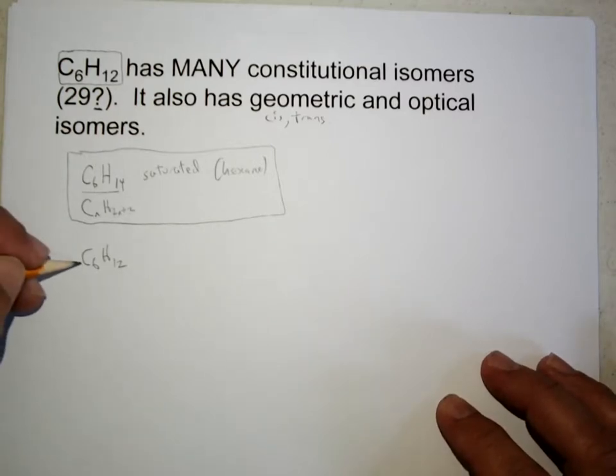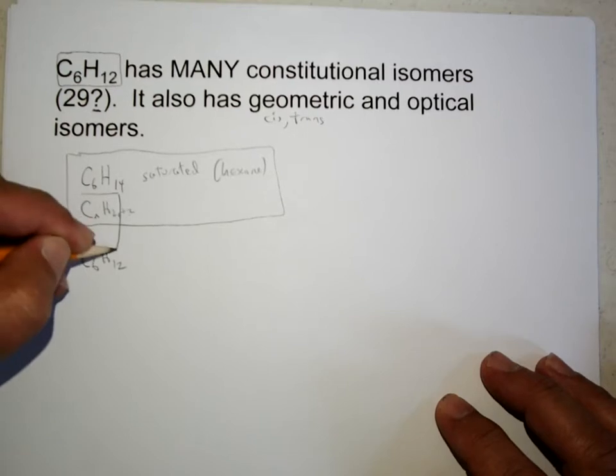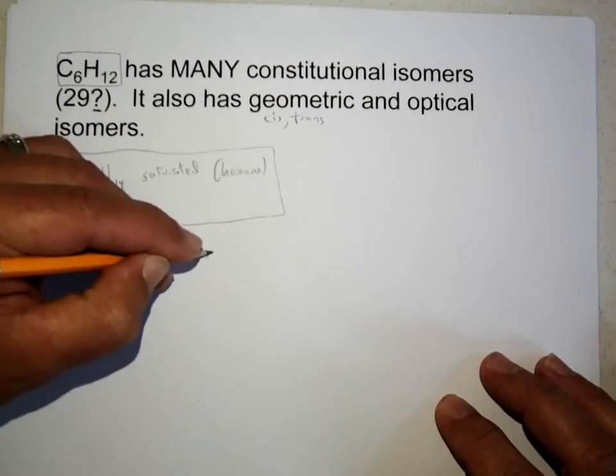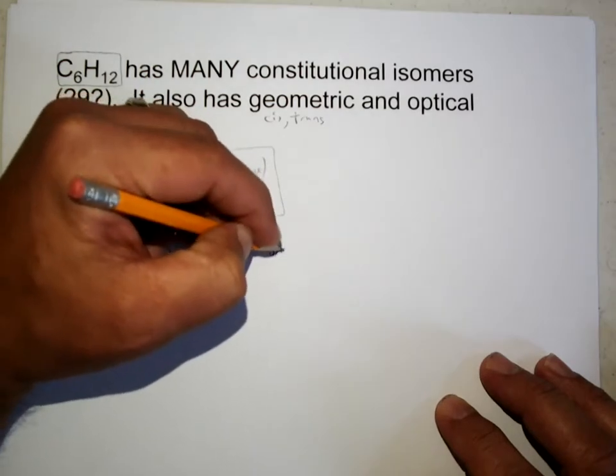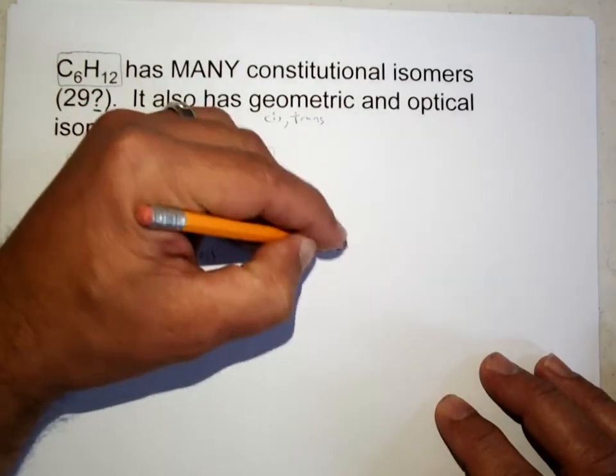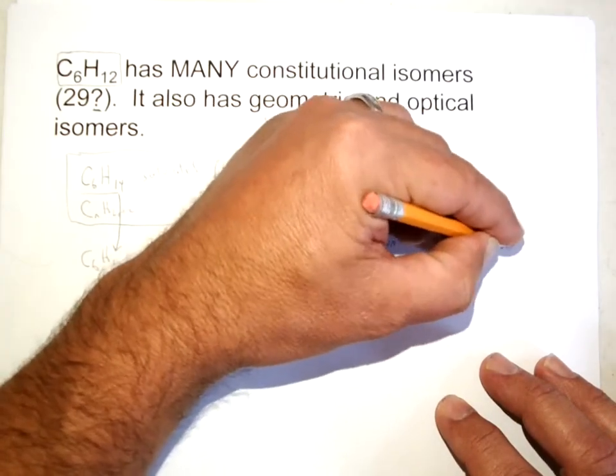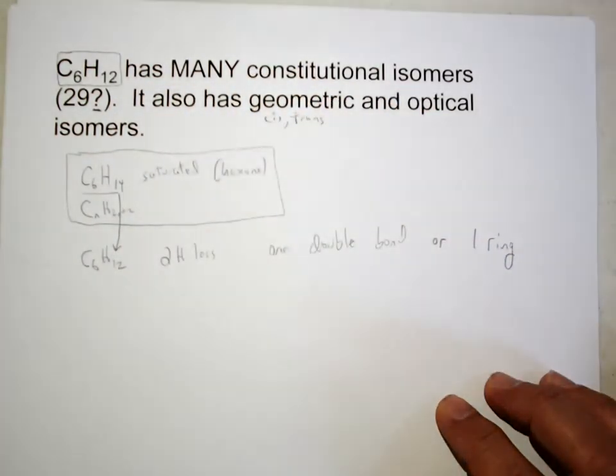So C6H12, since 12 is two hydrogens less, then we're going to have either one double bond or one ring in this structure. Either one double bond or one ring.